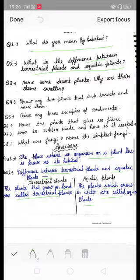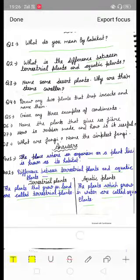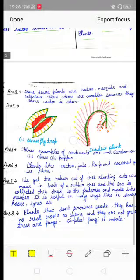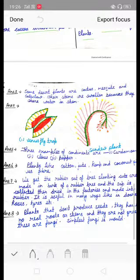Question number third is name some desert plants. Why are their stems swollen? Some desert plants are cactus, mesquite, and cat's claw. Their stems are swollen because they store water in the stem, so they are swollen.